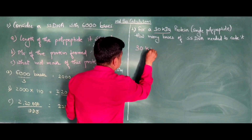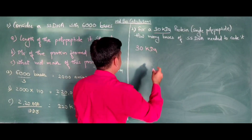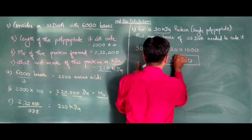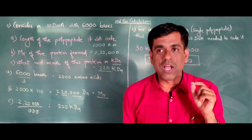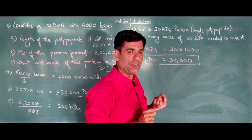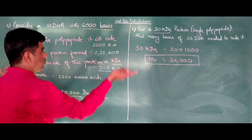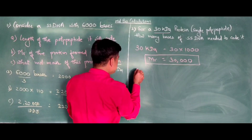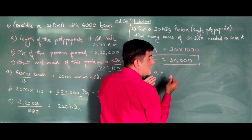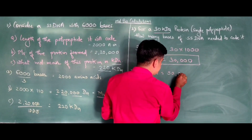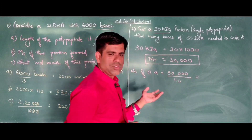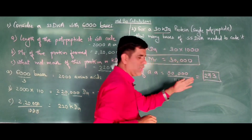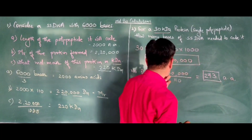Going exactly in reverse: I have 30 kilodaltons, so I convert it to Daltons: 30 × 1000 = 30,000 Daltons. Now I want to know how many amino acids correspond to this. Dividing by the average molecular weight of amino acids: 30,000 ÷ 110 ≈ 272.7, which I round to approximately 273 amino acids.